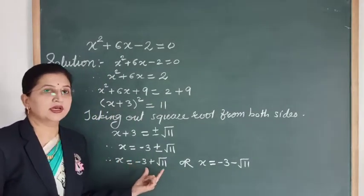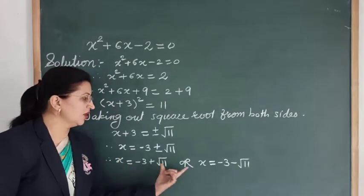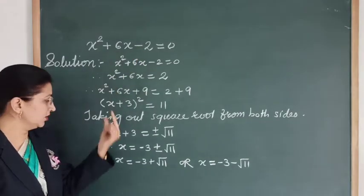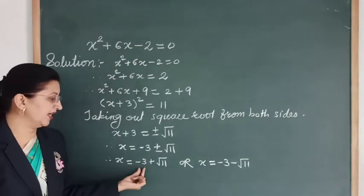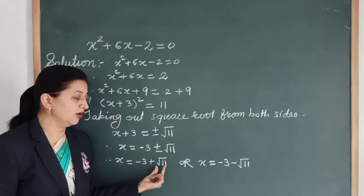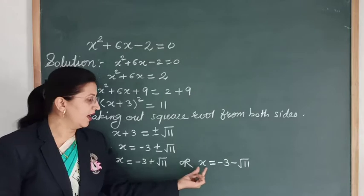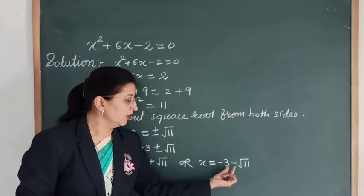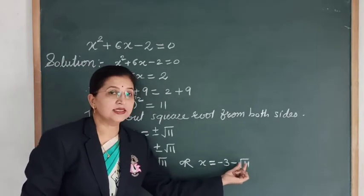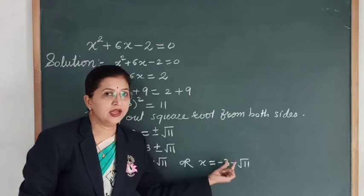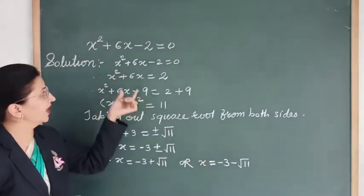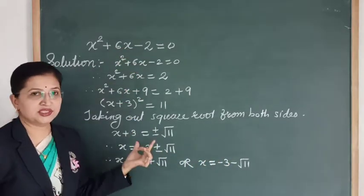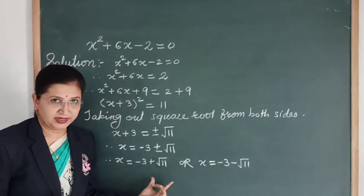We separate this into two solutions: x = -3 + √11 or x = -3 - √11. In this way, we got the roots of this quadratic equation, which are -3 + √11 and -3 - √11. So in this way we can solve a quadratic equation by the completing square method.